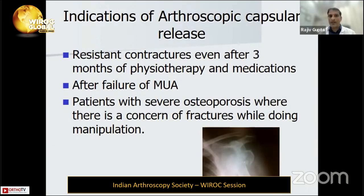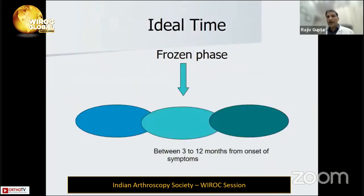Indications for arthroscopic release include: failure after three months of physiotherapy and medication with continuous loss of movement, failure of manipulation under anesthesia, and osteoporosis where there is a fracture risk with manipulation. The ideal timing for arthroscopic release is not during the freezing phase — somewhere between three to twelve months from symptom onset, ideally five to six months.